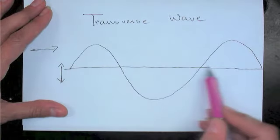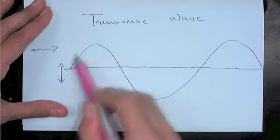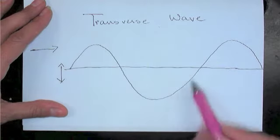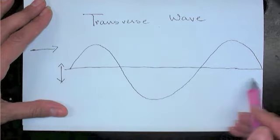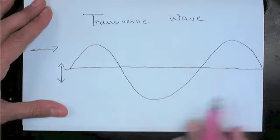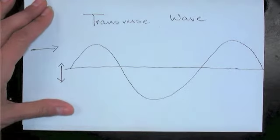So if you could consider this a string, then displacement is up and down as this displacement moves down the wave this way. So parts of a transverse wave: